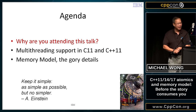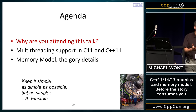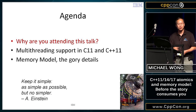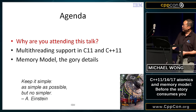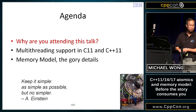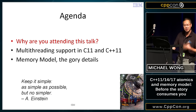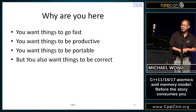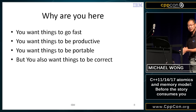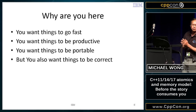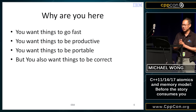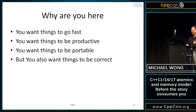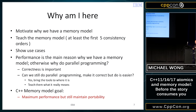Why are you here? This is the simple agenda — I only have three things to talk about: why are you here, what is the multithreading support in C11 and C++11, and the memory model — the gory details. I like to think you might want to find out how to make things go fast, how to make things productive but also portable, and how to make things correct. The gentleman yesterday said that one of the fastest parallel programs he can make is one that is incorrect.